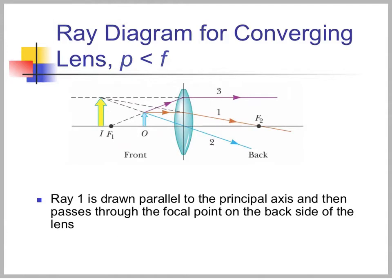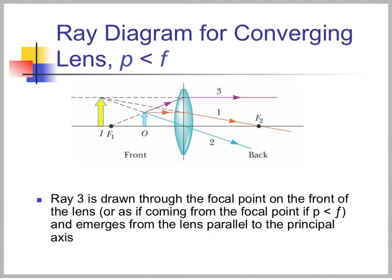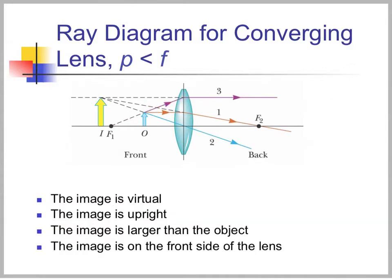If the object is inside the focal length, ray one goes parallel to the optical axis and through the focal point on the other side. Ray two goes through the center of the lens and continues straight. Ray three appears to come from the focal point and then runs parallel to the optical axis. In this case, the image is virtual because the rays don't actually cross — they just appear to have crossed. The image is upright, larger than the object, and on the front side of the lens. This is the idea of a magnifying glass: the object inside the focal length appears bigger.